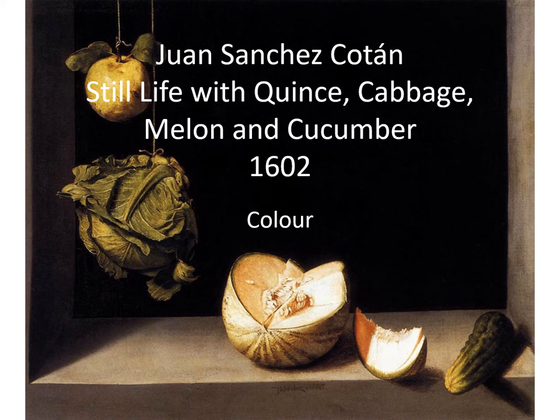The last thing I'm going to discuss is Cotan's use of colour. The first thing we can say is that it is very representational and naturalistic. These are very natural colours — his subject matter is completely natural — so we get mostly shades of green and then some salmony, pinky-orange shades inside the melon. These naturalistic colours are meant to fool us into thinking we are looking at real fruit and vegetables sitting there.